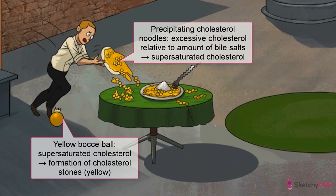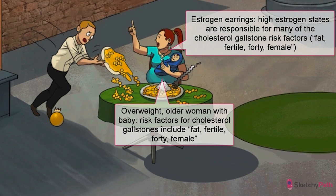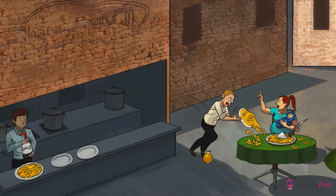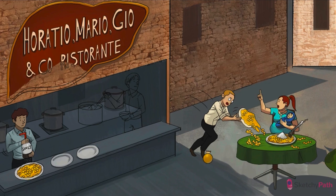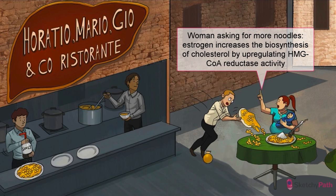One extra-large order of cholesterol, coming right up! There are many risk factors for gallstones, but the classic ones are called the four Fs: fat, fertile, forty, female — all embodied by our overweight, 40-something female patron who's obviously had one or multiple past pregnancies. It's easiest to think of these collectively as high estrogen states. Estrogens increase the biosynthesis of cholesterol by up-regulating HMG-CoA reductase activity in the liver. The liver doesn't just process and store cholesterol — it can make its own as well.